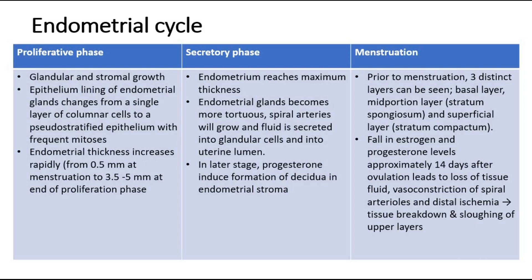The second phase is the secretory phase. When the endometrium reaches its maximum thickness, the endometrial glands become tortuous, spiral arteries grow, and fluid is secreted into the glandular cells and into the uterine lumen. Later on, progesterone will induce the formation of the decidua in the endometrial stroma.